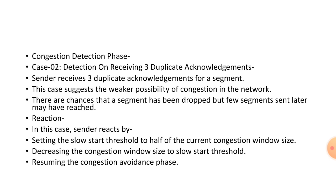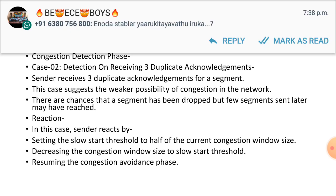In Case 2, the sender receives three duplicate acknowledgements for a segment. This causes a weaker possibility of congestion on the network — there are chances that the segment has been dropped. The sender reacts by setting the slow start threshold to half the current congestion window size and decreasing the congestion window size to the slow start threshold, then resuming the congestion avoidance phase.